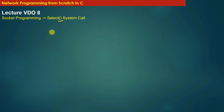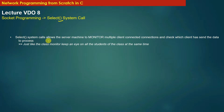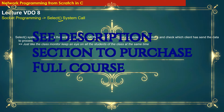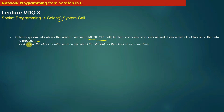The select system call allows the server machine to monitor multiple client connections and check which client has sent data to the process. Select system call is used to monitor multiple clients which are already connected with the server, and using select, the server keeps monitoring multiple client connections and checks which client has sent data and which client needs a service.